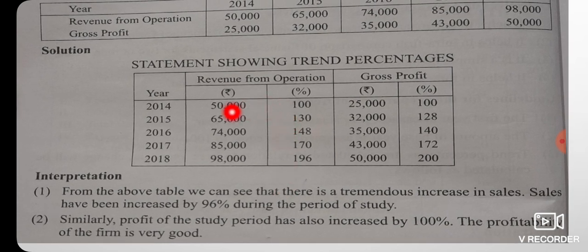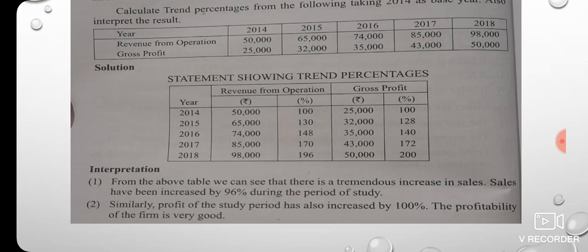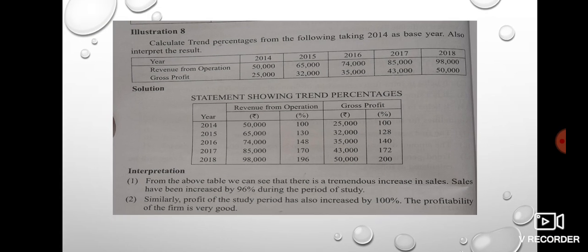Interpretation: revenue from operations shows a 24% increase, reaching 96%. Gross profit shows a 100% increase. This is the trend analysis. Next, we will look at cash flow statements. If you have any problems, please post them. Please like, share, comment and subscribe. See you in the next video. Bye-bye!